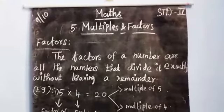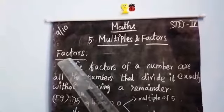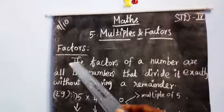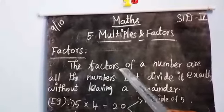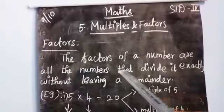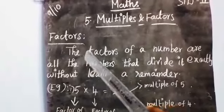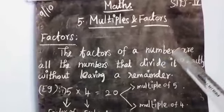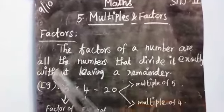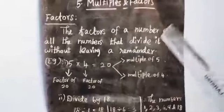Good morning students. In the previous class you studied about multiples. Today we are going to the next section: factors. A factor of a number is any number that divides it exactly without leaving a remainder. The remainder is always zero. That is a factor.